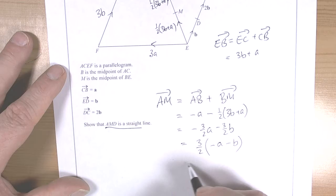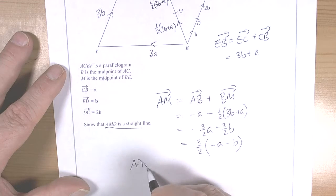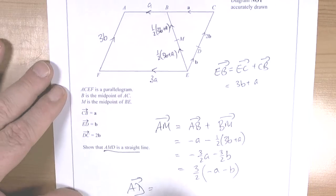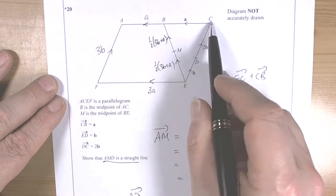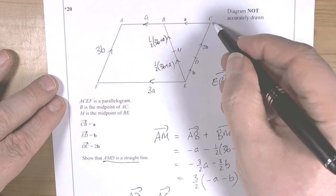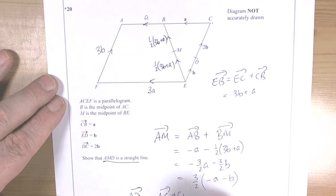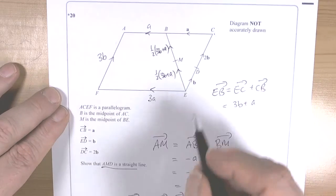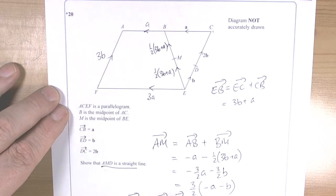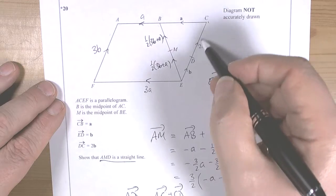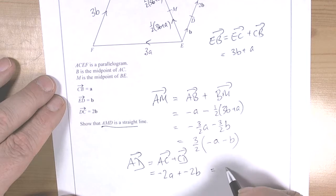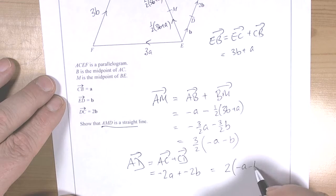So now I need to work out what A to D is. So the journey A to D is going to be AC plus CD. While A to C we can see is negative 2a, plus C to D is negative 2b, which factorizes to 2 of negative a negative b.